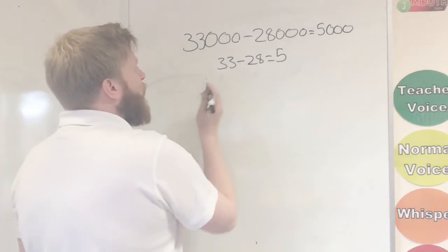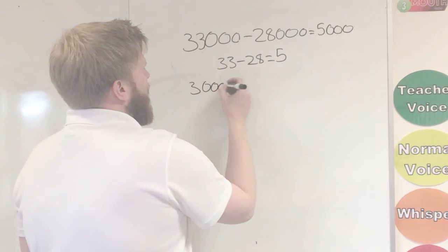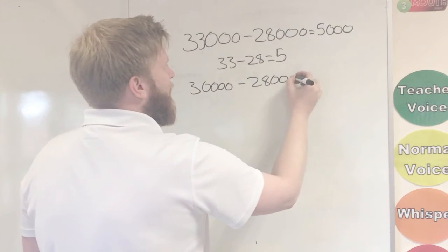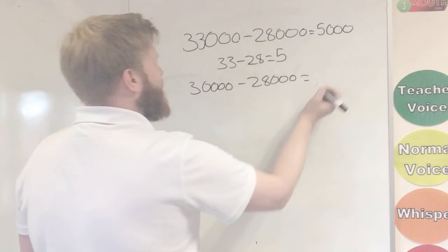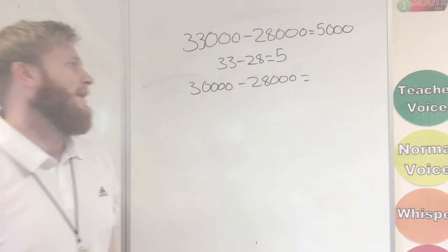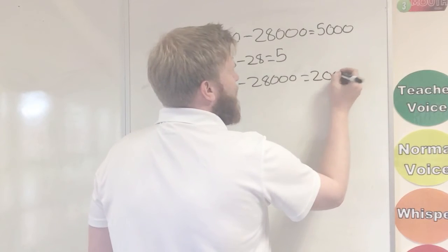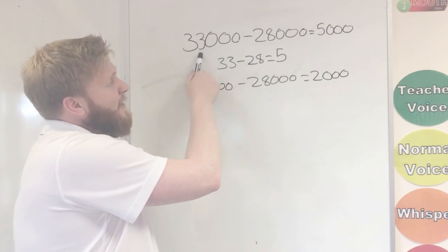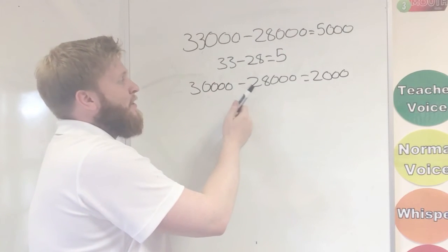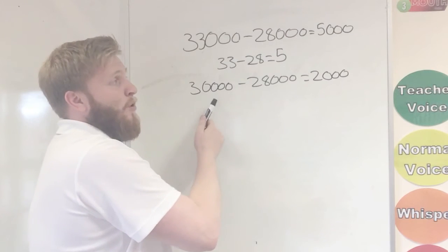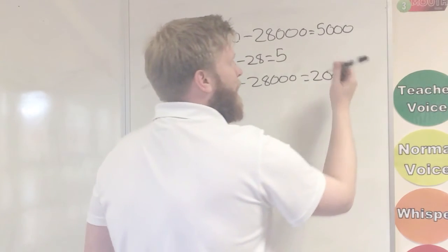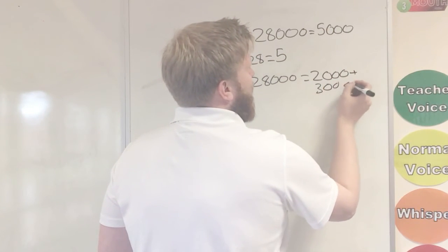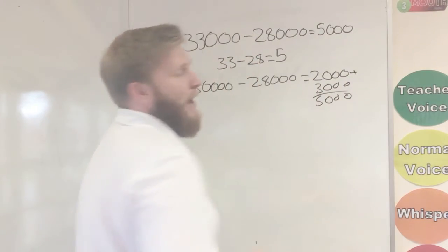Other way we could do it, we'll change this one to 30,000 again. Keep that one as 28,000. And now we've got 30,000, take away 28,000. Now that'll equal 2,000. But, as before, I've took 3,000 off. But because I've taken 3,000 off, this time it means I've taken away from a smaller number. So I need to put my 3,000 back on. So 2,000 plus our 3,000 would get us the same number of 5,000.